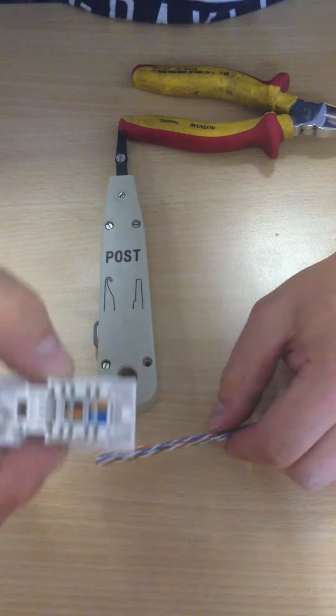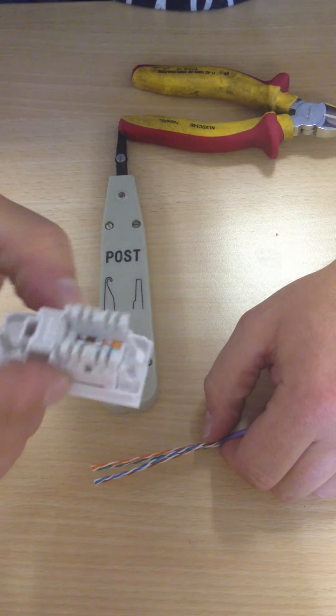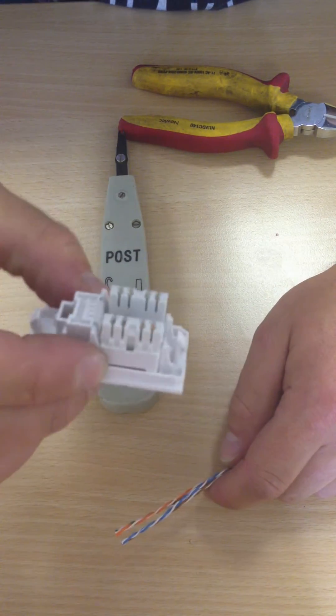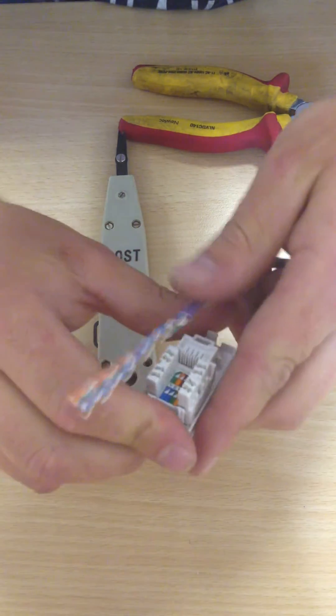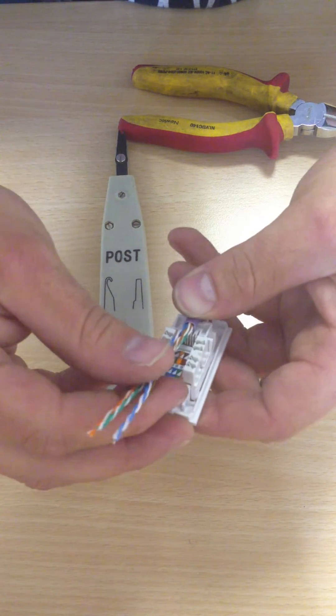Now you have your pairs. If you look closely at your module, every module should have the color code in. We want to use Type B today. Anywhere is normally Type B unless it is in America.